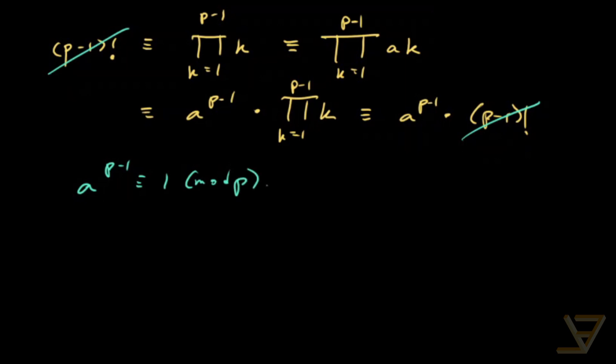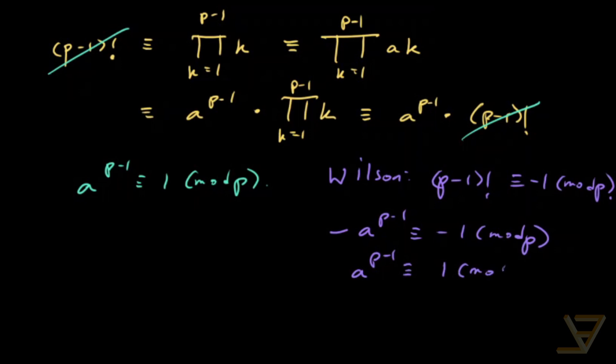The other way is to use Wilson's theorem, which says that p minus 1 factorial is congruent to negative 1 mod p for any prime p, including 2. So we still get the same result, but we just get the negative version of it, which is negative a to the p minus 1 is congruent to negative 1 mod p, which is the same as a to the p minus 1 is congruent to 1 mod p. Same thing either way.